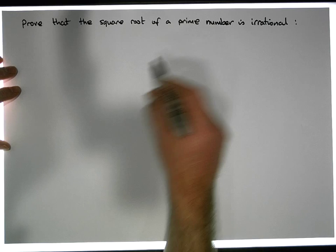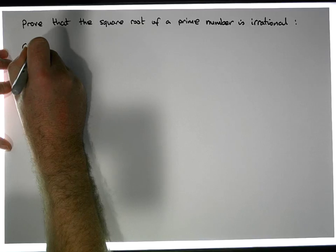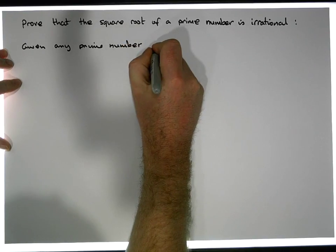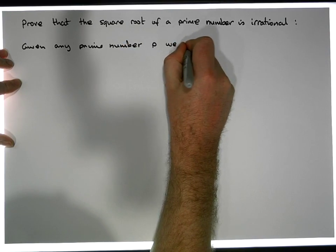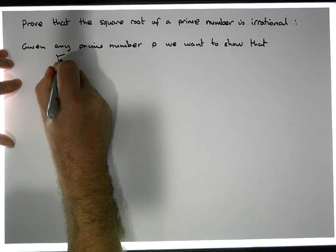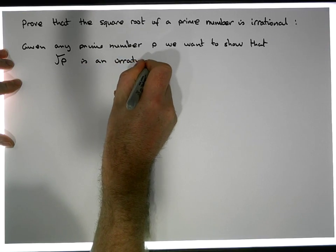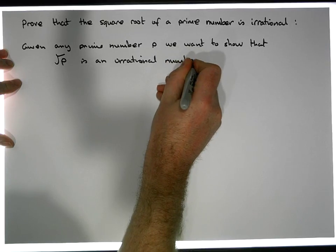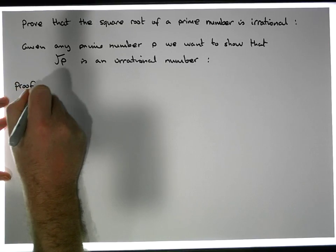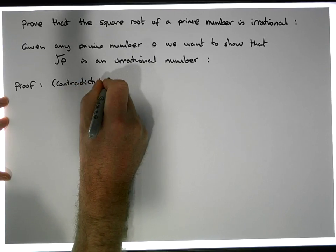So let's start the proof. Before I can actually do this I need to have a prime number to start off with. Given any prime number P, we want to show that the square root of P is an irrational number. We'd like to show that the square root of P is an irrational number. So let's do the proof — it's a proof by contradiction.